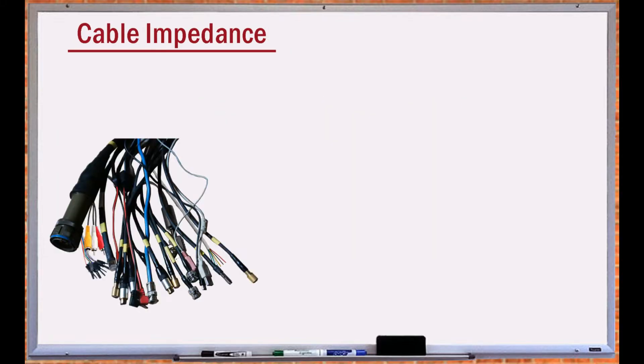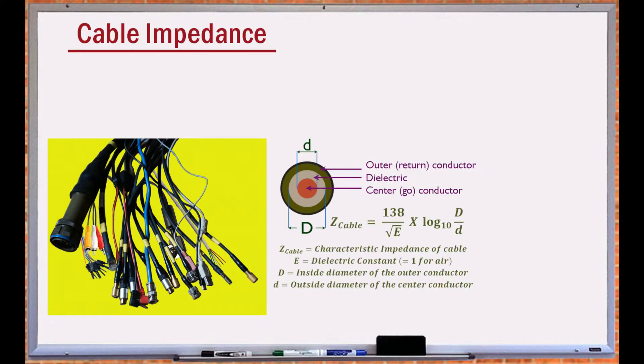Cables are mediums by which electrical signals are transferred from one point to another. A cable is usually constructed by two metallic conductors separated by an insulator. The impedance of a cable is the impedance between these conductors, and is fixed regardless of the length of the cable.